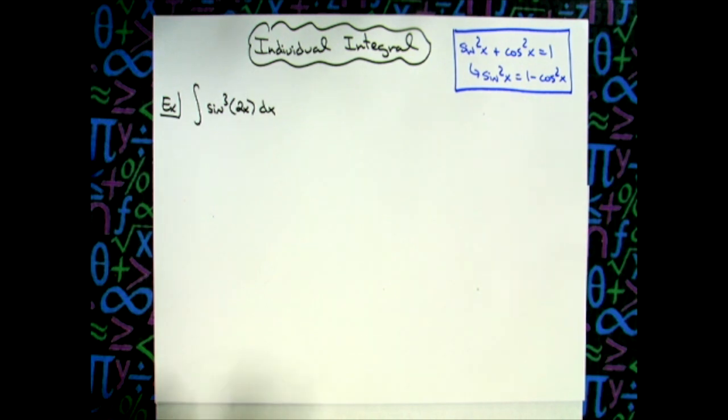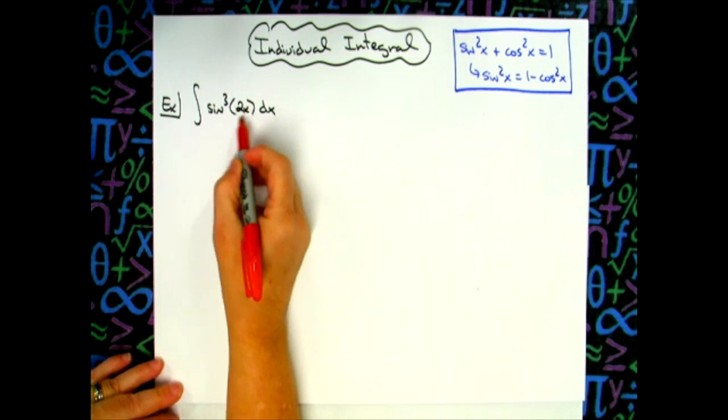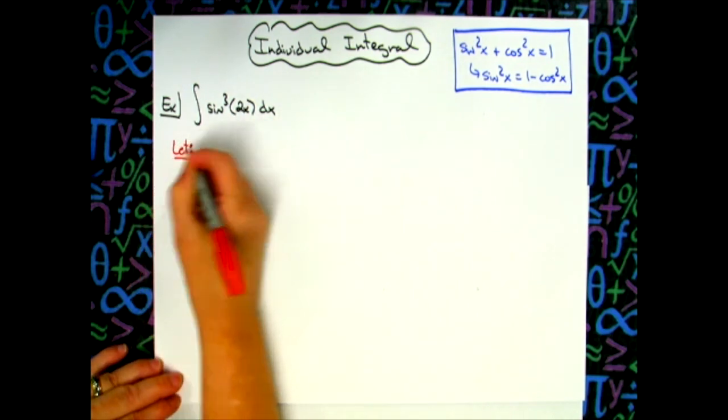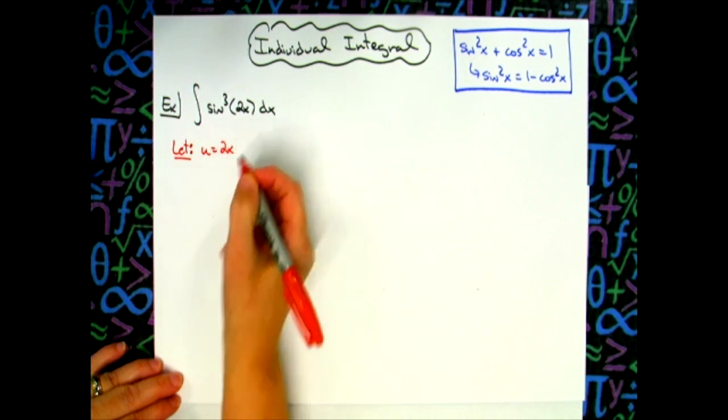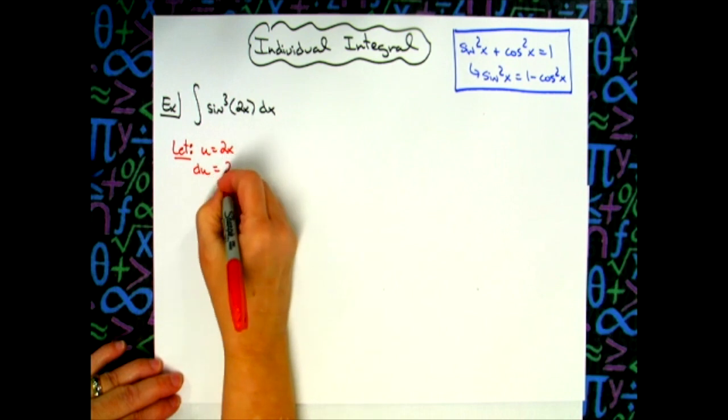But first, one step at a time, we're going to have to do a double substitution on this. So the first thing I want to do is I want to get rid of that 2x first. So I'm going to let my u equal 2x. We'll take a derivative of both sides here. So we'll have du is equal to 2 dx.